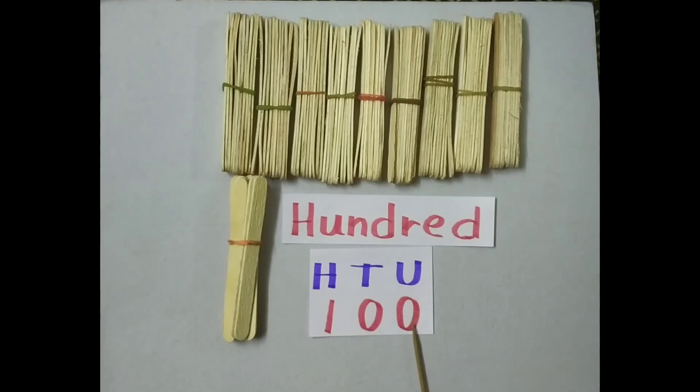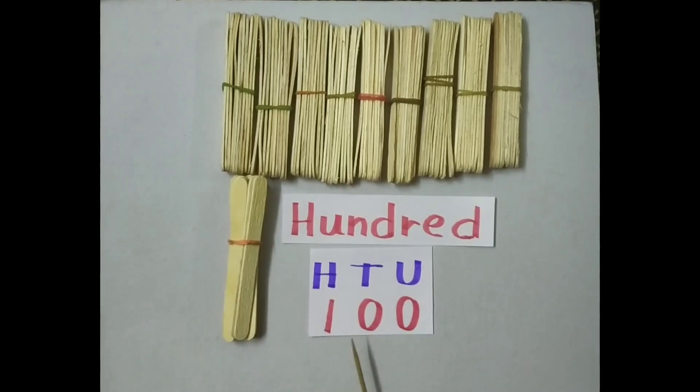Unit ke place mein zero likhna hai. Tens ke place mein zero likhna hai. H matlab hundred. Hundred means mein one likhna hai. To ye ban jata hai one hundred. Ten tens is equal to one hundred.